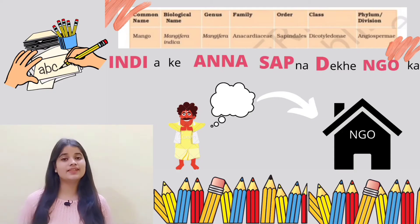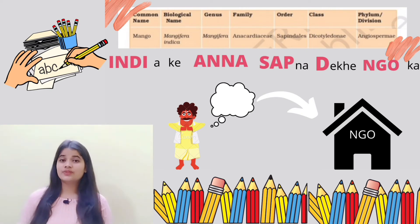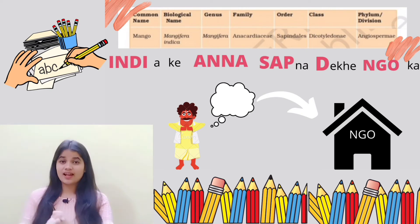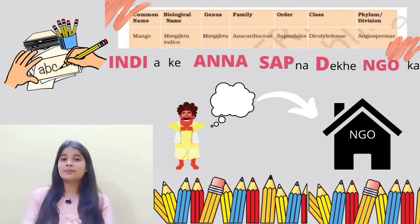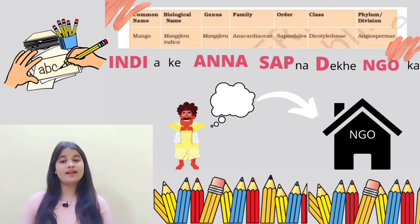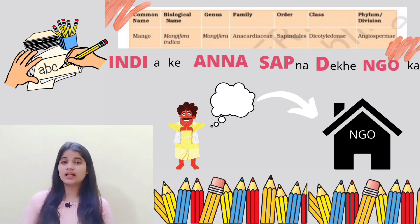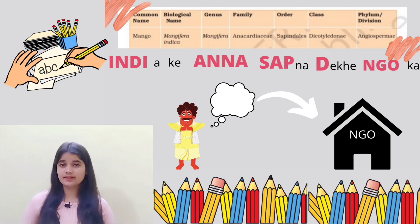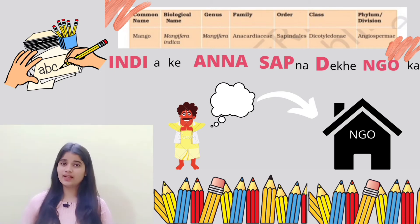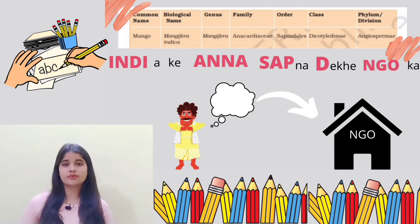Next is Mangifera indica, that is mango. And the trick is 'India ke Anna sapna dekhe Angio.' Where 'India' represents the species Indica, 'Anna' represents Family Anacardiaceae, 'Sapna' represents Order Sapindales, 'Dekhe' goes for Class Dicot, and 'Angio' stands for Division Angiospermae.